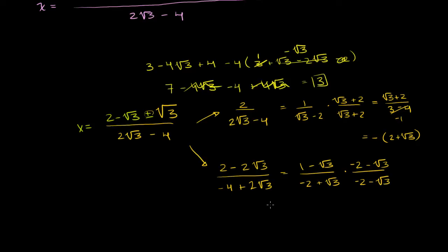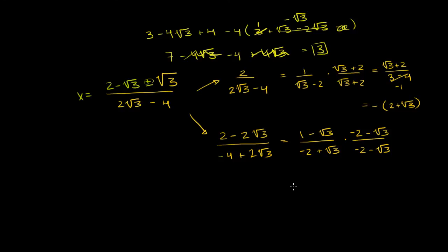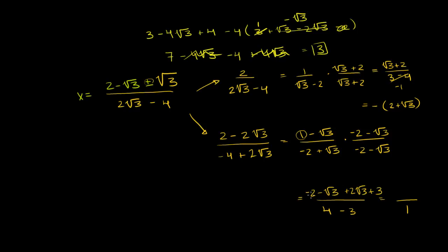In the denominator we get negative 2 times negative 2 is 4, minus 3 — so we just get 1. In the numerator: 1 times negative 2 minus square root of 3 is negative 2 minus square root of 3. Then negative square root of 3 times negative 2 is plus 2 square roots of 3, and negative square root of 3 times negative square root of 3 is plus 3. So 3 minus 2 is 1, and 2 square roots of 3 minus square root of 3 is plus square root of 3 — giving us 1 plus square root of 3.